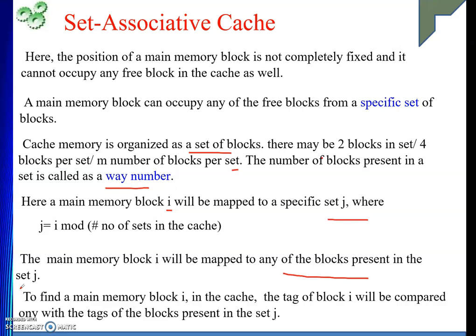The idea is understood. To find main memory block I in the cache, how many blocks do we need to check? Only inside the set. Inside the set, there may be four, sixteen, eight, or two blocks. For all of them, we compare their tag with the incoming block I's tag. If they match, then it is a hit; else it is a miss. So to find main memory block I in the cache, the tag of block I will be compared only with the tags of the blocks present in set J.